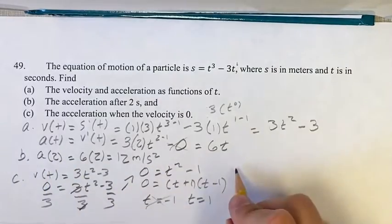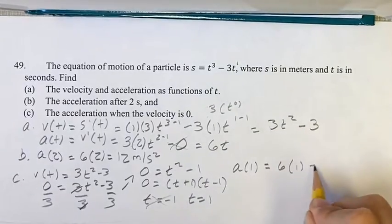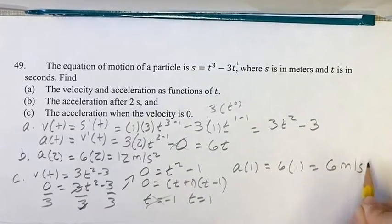So again, just to find this, we just have to plug in 1 for t, which gives us 6 times t, which is 1, equals 6 meters per second squared.